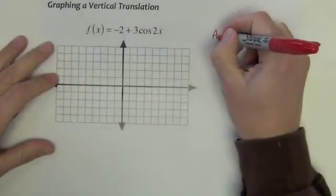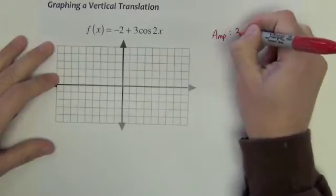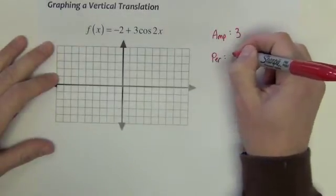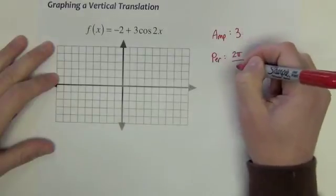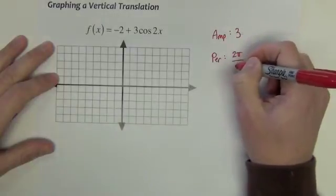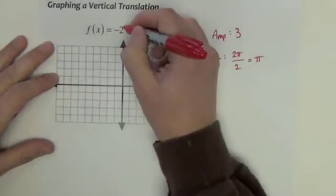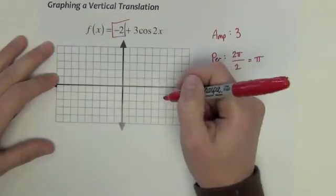Okay, let's look at a graph that has a vertical translation. I could begin the same way. Amplitude is the number that multiplies the trig function. Period is 2π divided by the number that multiplies the x inside the trig function. So then the question is like, what about this negative 2?